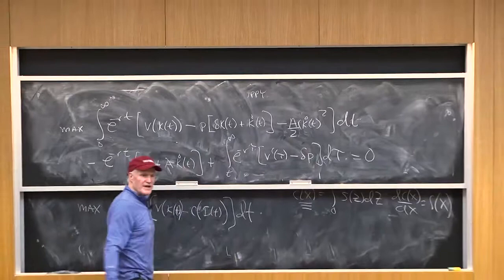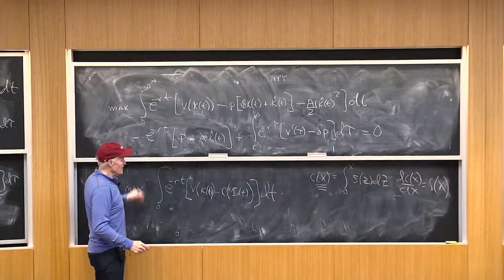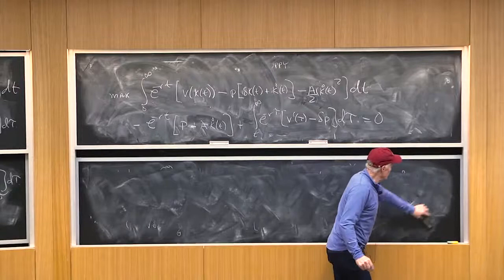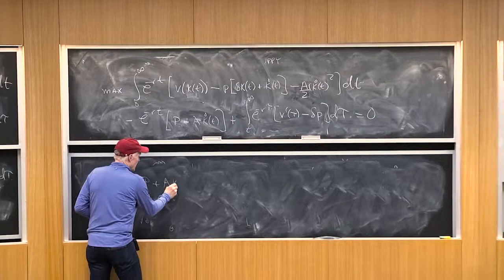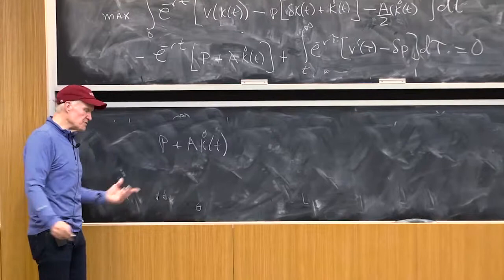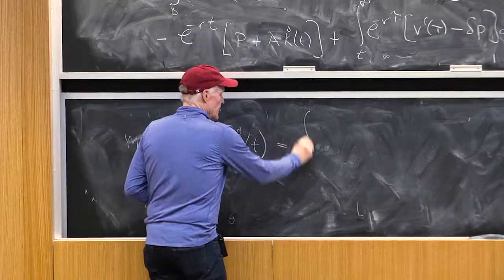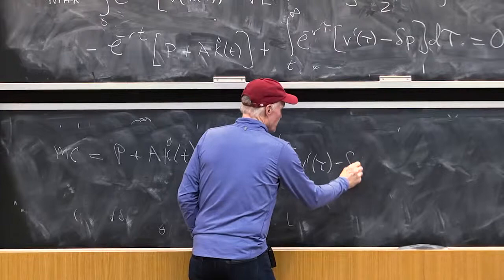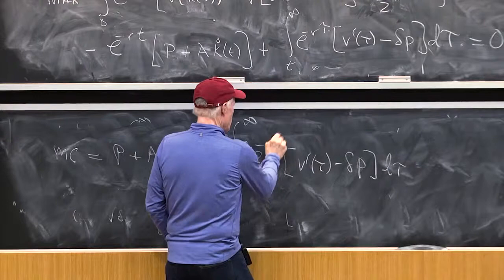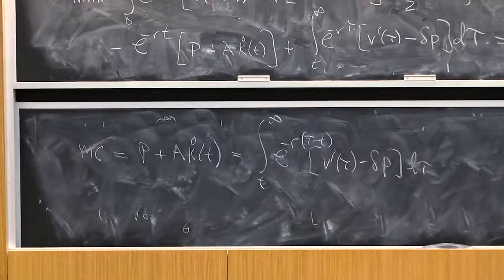Remember, I'm holding future k dots fixed, so I'm not changing future k dots at all. So what do I get? I get p plus a k dot of t, which is really my marginal cost of investment, equals integral t to infinity e to the minus r times tau minus t, v prime of tau minus delta p d tau. That's because I just brought the minus rt over the other side.